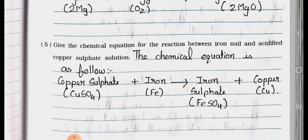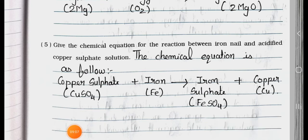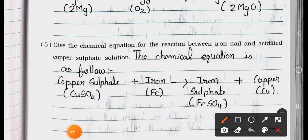Question number 5: Give the chemical equation for the reaction between iron nail and acidified copper sulfate solution. Answer: The chemical equation is as follows: CuSO₄ + Fe → FeSO₄ + Cu. That is, copper sulfate plus iron gives iron sulfate plus copper.